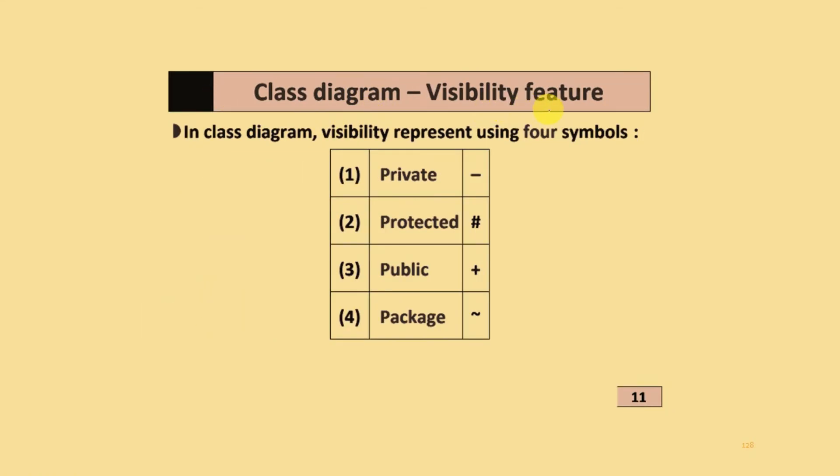Class diagram visibility feature: visibility is represented by using four symbols. Private uses hyphen symbol or dash, protected uses hash, public uses plus sign, and for package, tilde symbol is used.